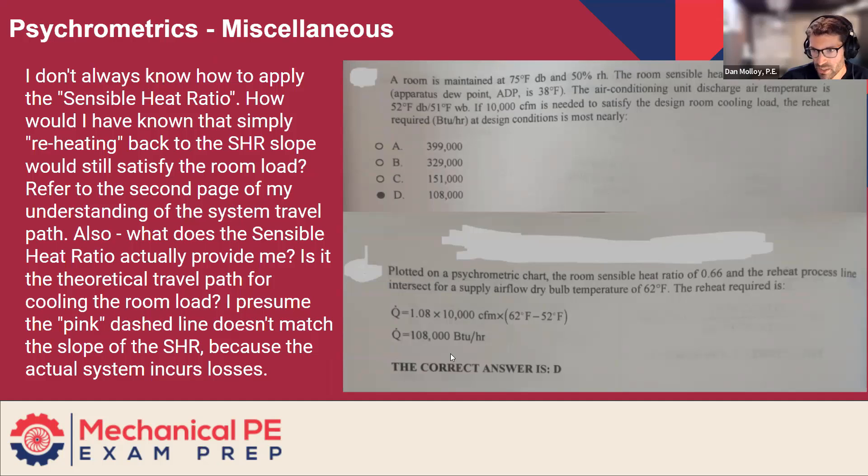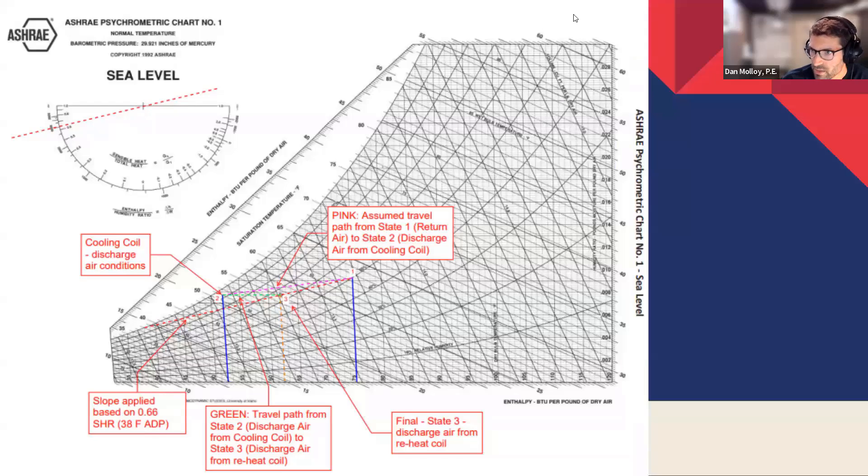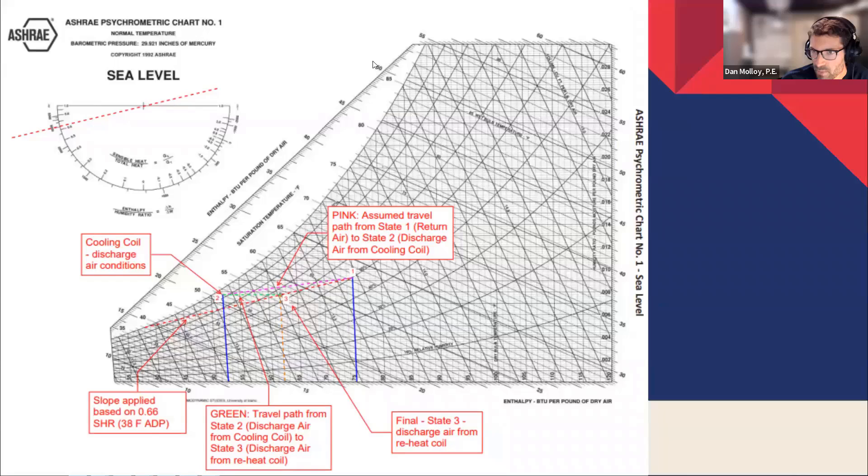And the solution, they have us draw the sensible heat ratio line and also a line from the room condition to the supply condition. And it's the reheat that we're being asked to quantify. And they end up using 1.08 CFM delta T to find out what that quantity of reheat is. But the question here is like, how am I supposed to know that the reheat is the distance between the discharge air temperature point and the SHR line? And let's go to the picture to kind of answer that. It's probably the best way. And maybe I can even darken some of the lines that you drew here. Did a nice job showing this.